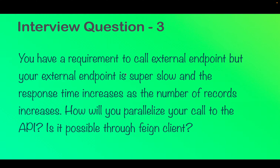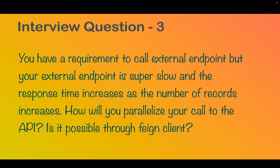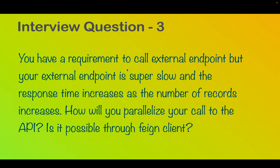The next question: you have a requirement to call an external endpoint but it is super slow, and the response time increases as the number of records increases. What will you do? I have microservice M1 which is super slow, and M2 needs to consume the response from M1. You can answer that you can parallelize the call or use an asynchronous call to your API so that processes in the pipeline won't get delayed.